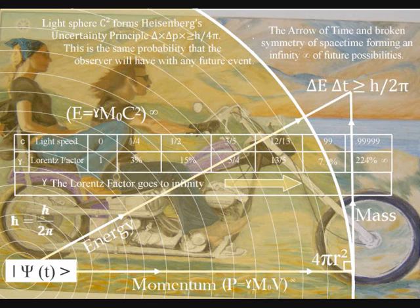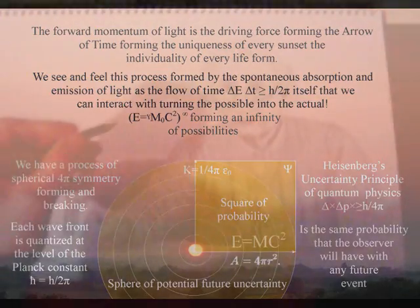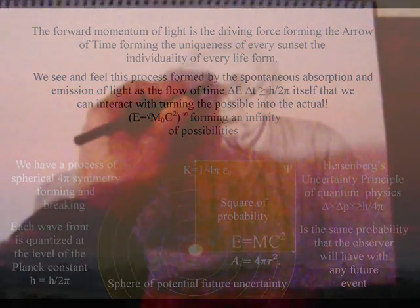That in this theory represents the same uncertainty we have with any future event. The forward momentum of light is the driving force forming the arrow of time, creating a blank canvas that we can interact with, forming the possible into the actual.